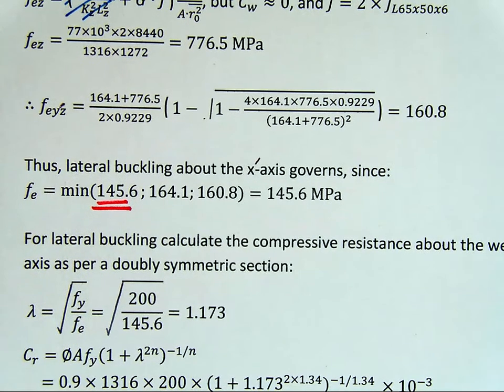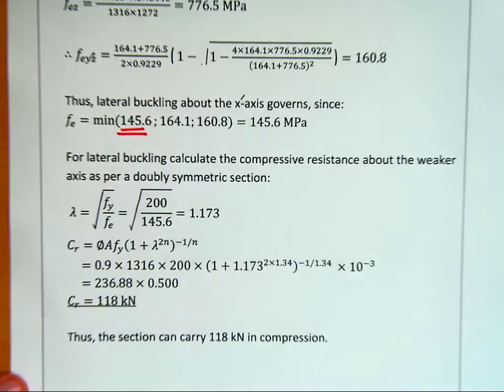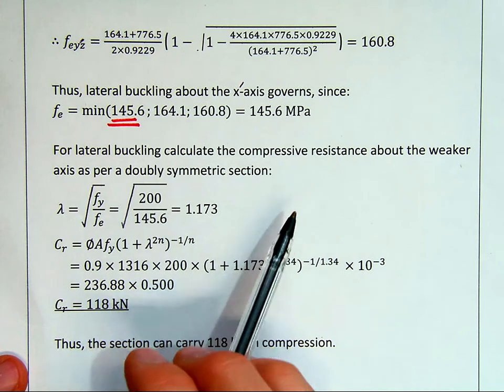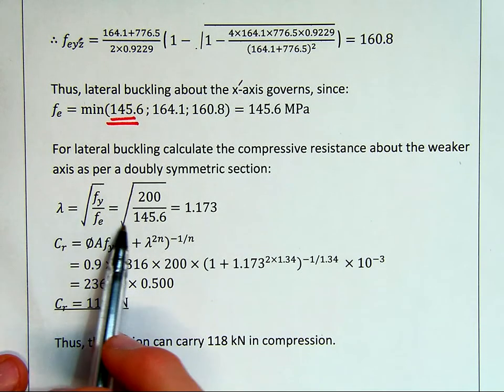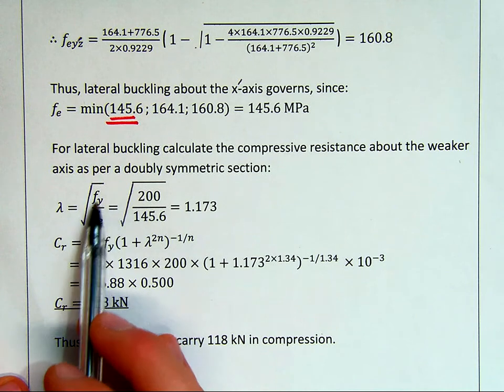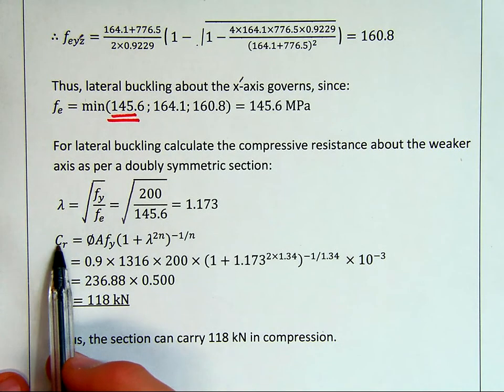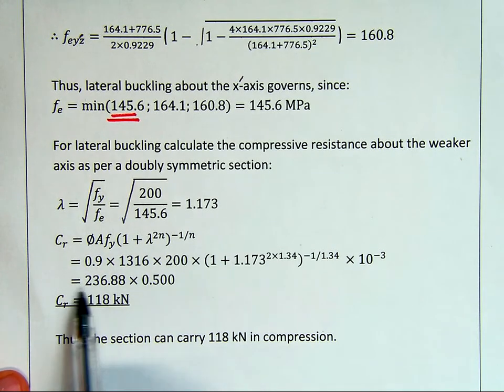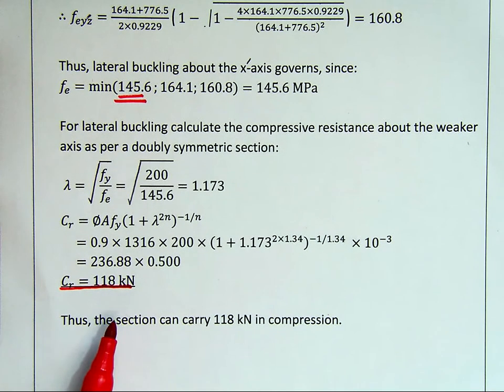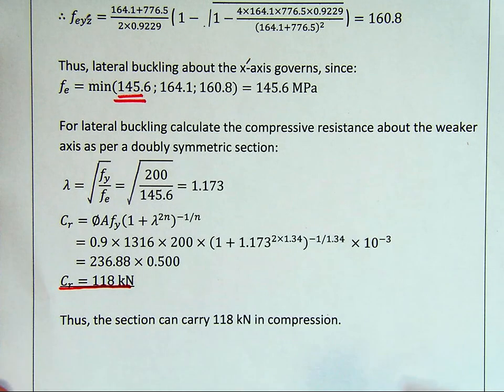Once we have our elastic buckling stress, we convert it into a non-dimensional slenderness. For lateral buckling, calculate the compressive resistance about the weaker axis as per doubly symmetric section. Now it becomes relatively straightforward. We take our square root of the yield over our elastic, and we have a value. This is quantifying both the influence of yield and elastic buckling. We plug this in our traditional compressive resistance. We run through the equation, and we get to a value of 118 kilonewtons. So that means when we load the section up, it will eventually fail at 118 kilonewtons. So each one is taking roughly about 59, and that will be then the failure capacity of our section.